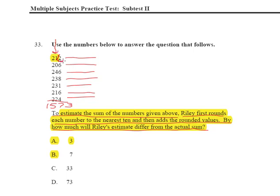That means that if this number were 5 or greater, we would round up. It's not, so we're going to round down. This is going to be 210. 206, that 6 right there is greater than 5, so we'll round that up to 210.